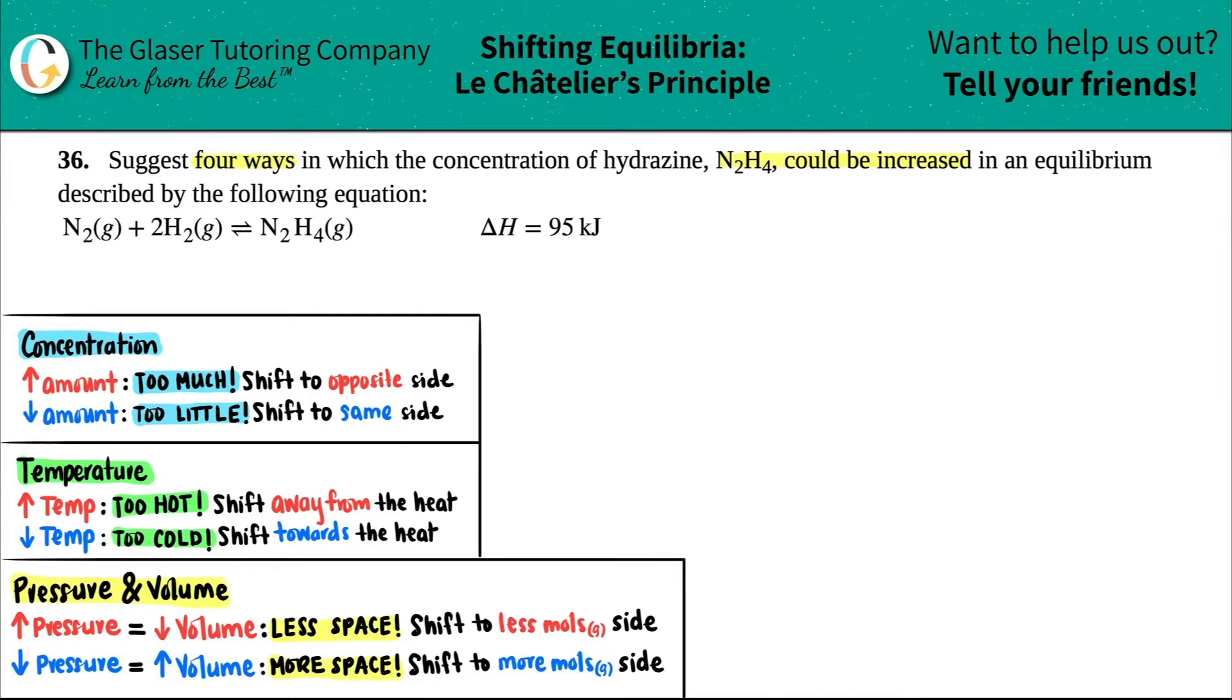So the first thing I'm going to do is I'm going to just write out this reaction. So I got N2 gas plus 2H2 gas, and this comes to equilibrium. Double arrow with the hydrazine, N2H4, and that's also a gas.